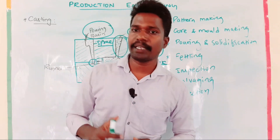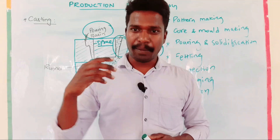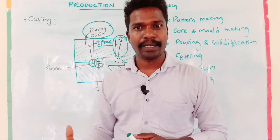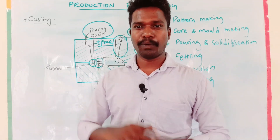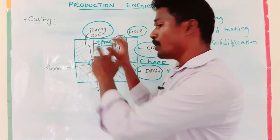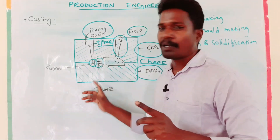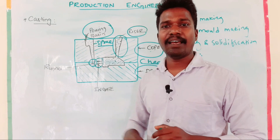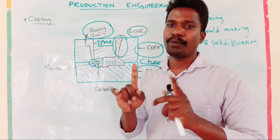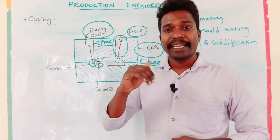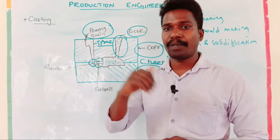This is the molding. The mold is either a permanent mold, semi-permanent mold, or expandable mold. The expandable mold is one time use — one time to use the mold, one time to produce. That is one-cast molding or expandable mold casting.